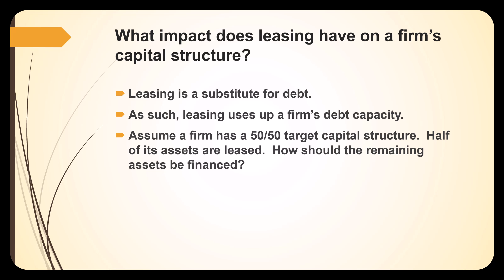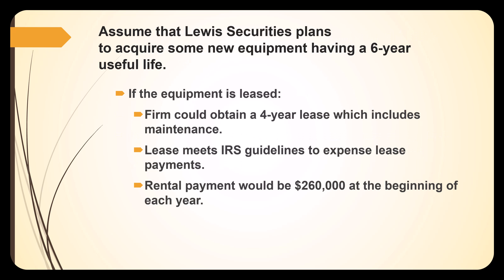On the income statement, the lessee shows the lease payment as an expense, while the lessor shows it as revenue. Creditors want to know your actual debt liability. Historically, operating leases have been referred to as 'off-balance-sheet financing' because they don't show up as debt — they appear in footnotes as a line item or explanation of expenses.